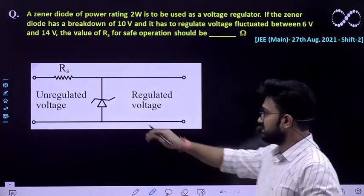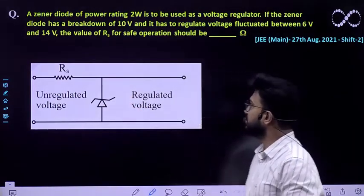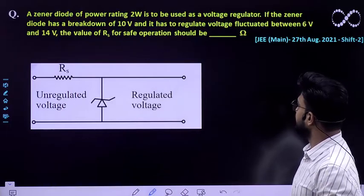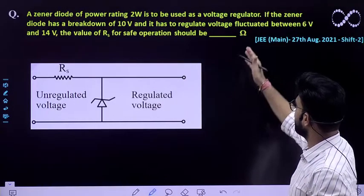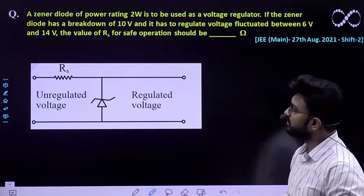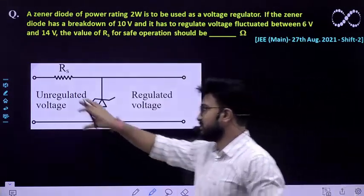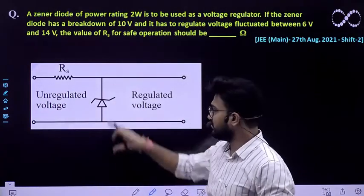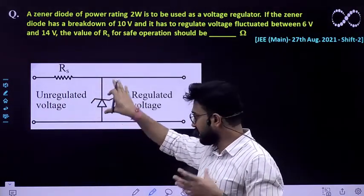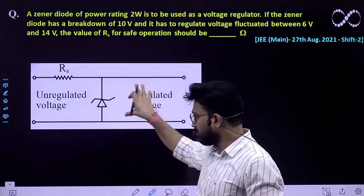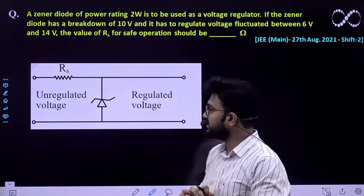So that means it works at 10 voltage and it has regulated voltage fluctuation between 6 and 14 volts. So unregulated voltage will be given to the Zener diode and it will regulate it, and the net output voltage would be 10 volt.